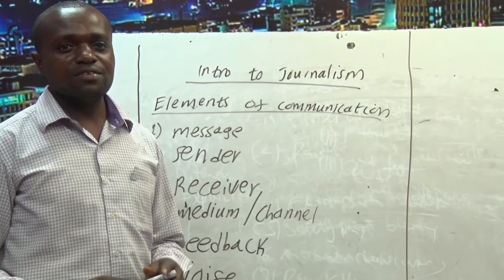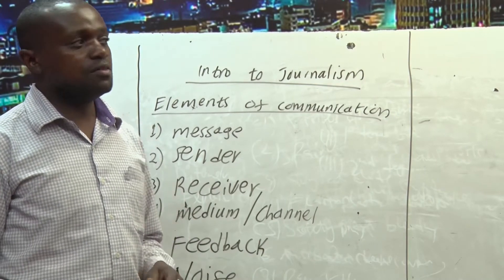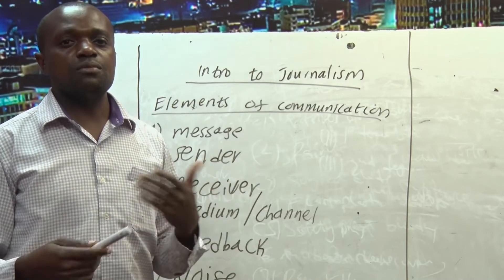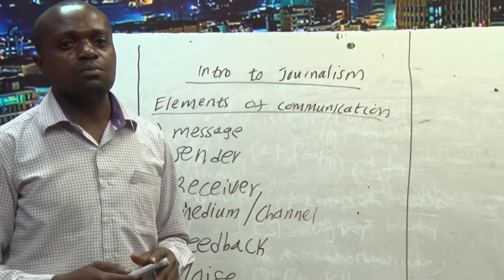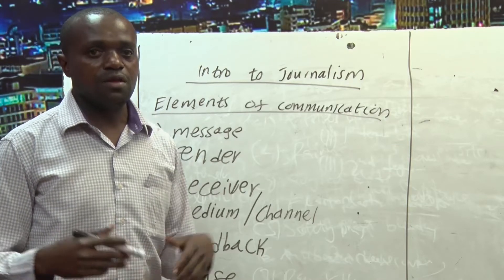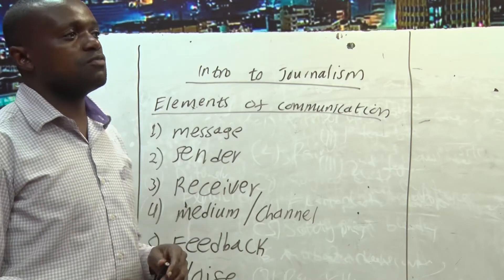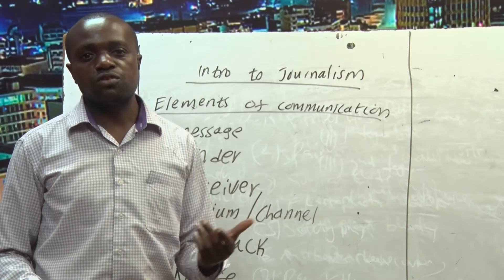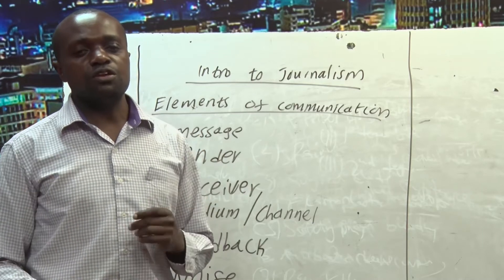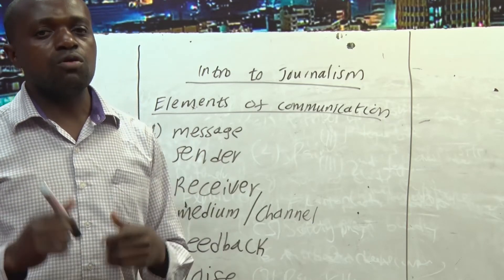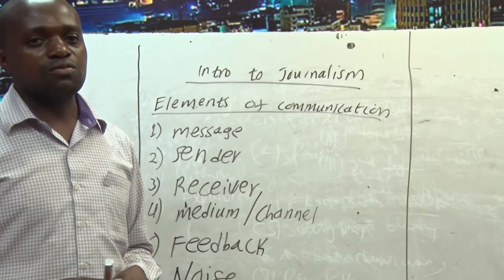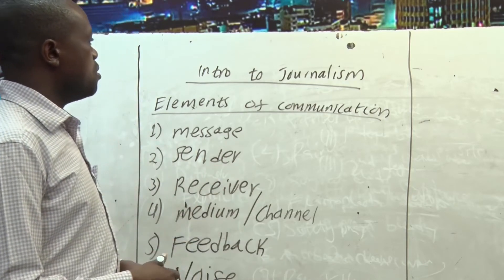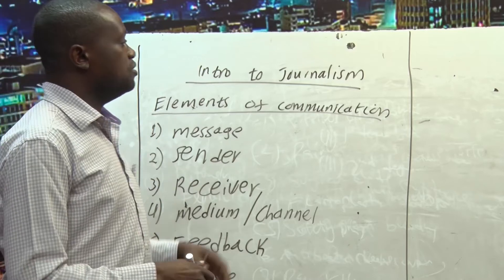Hello and welcome to our today's class. We are going to discuss the unit called introduction to journalism. As you know, journalism is a form of communication or disseminating information on behalf of the audiences. When you want to disseminate information as a journalist, you must always look for reliable sources of information and ensure that your information is credible before you disseminate it to the targeted audiences. So today we are going to focus on the elements of communication.